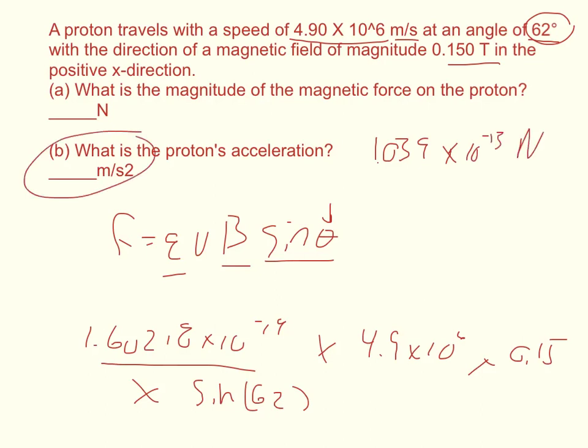Now what's the proton's acceleration? That's simply the force divided by mass. The mass of a proton is 1.67262 times 10 to the negative 27th. So you should get a large acceleration of 6.216 times 10 to the positive 13 meters per second squared.